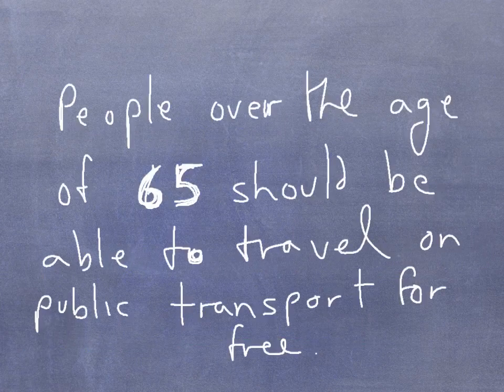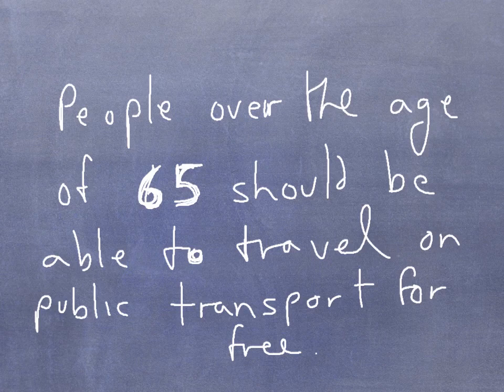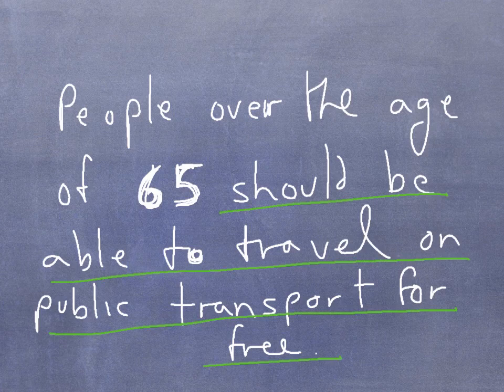Here is another normative statement. People over the age of 65 should be able to travel on public transport for free. Again, this phrase, should be able to travel on public transport for free, is the opinion in this statement, which makes it a normative statement.